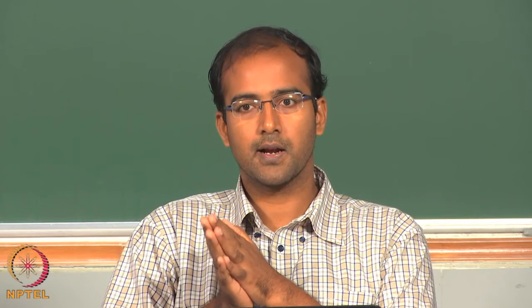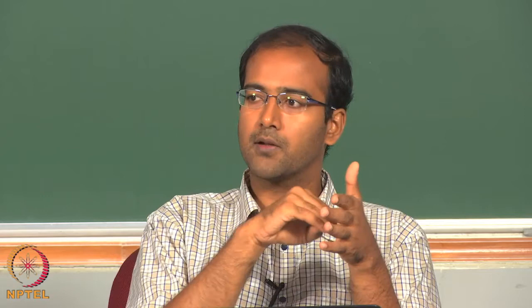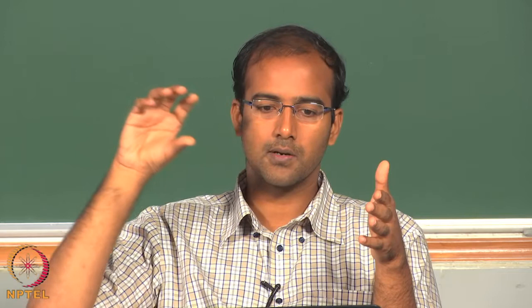The heat generation happens at nanometers; level 1 dissipation to the chip carrier is mostly governed by contact resistance — a material phenomenon. From the substrate, which is of the order of millimeter square, micro channels can be etched in parallel into the substrate to make transfer of heat to a cold plate outside much easier. From the cold plate, conventional techniques such as heat pipes, fans, or impingement cooling handle macro-scale heat removal.